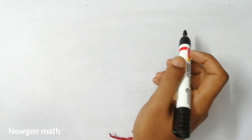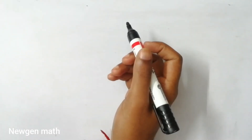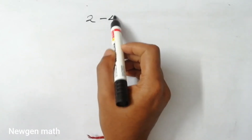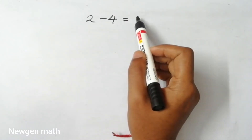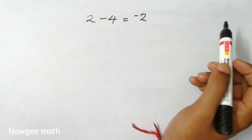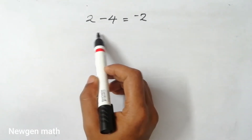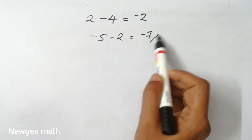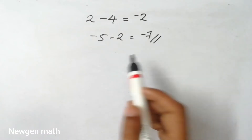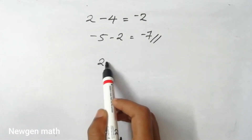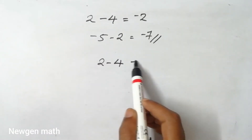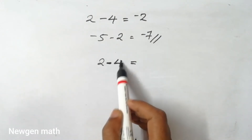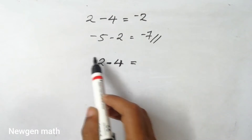We are trying to do the same thing with addition and subtraction. 2 minus 4 — we can do the answer: minus 5 minus 2. Now, two minus four. To get two single times: one minus four, two minus two.